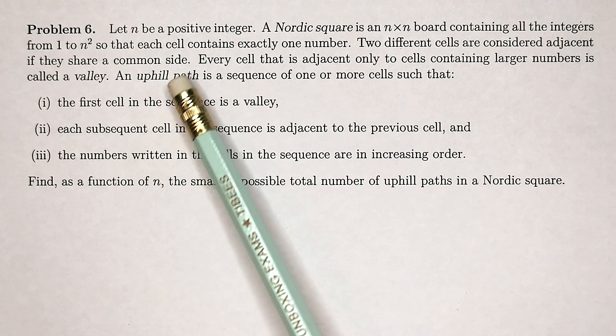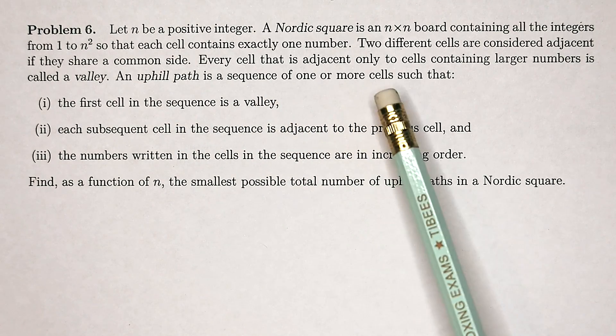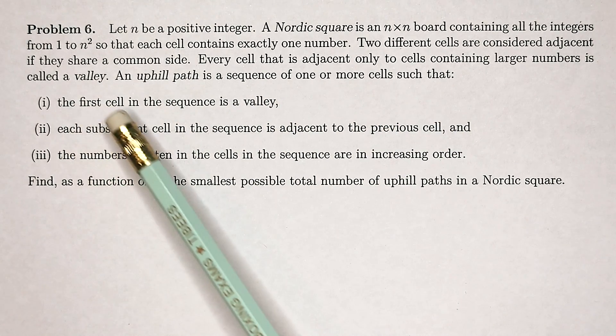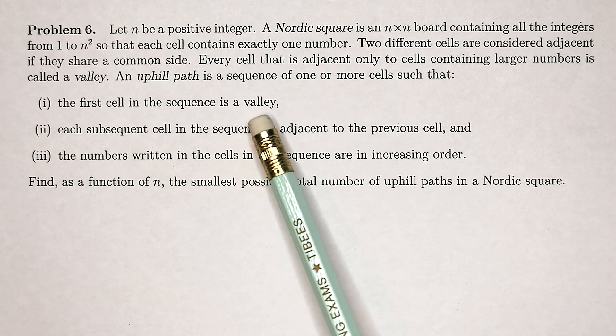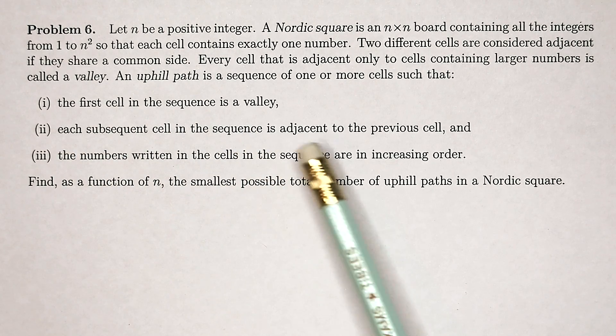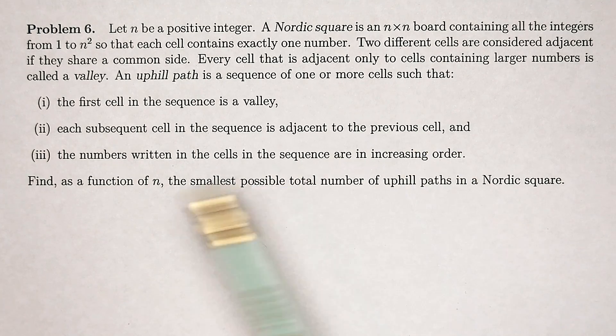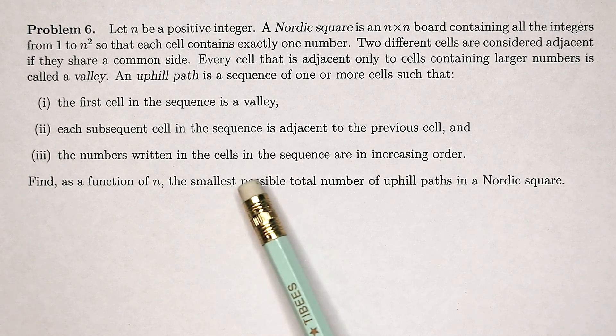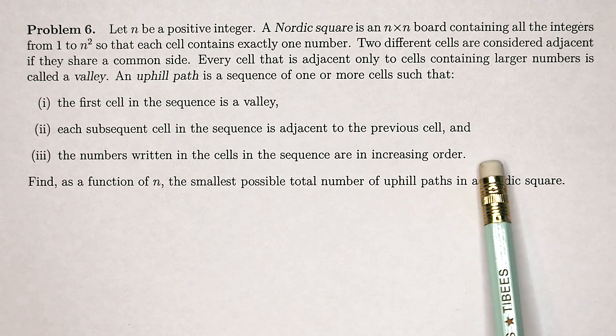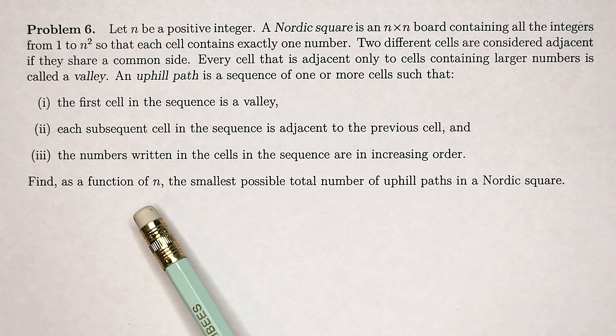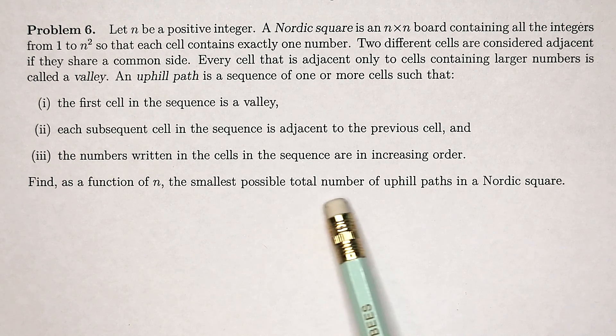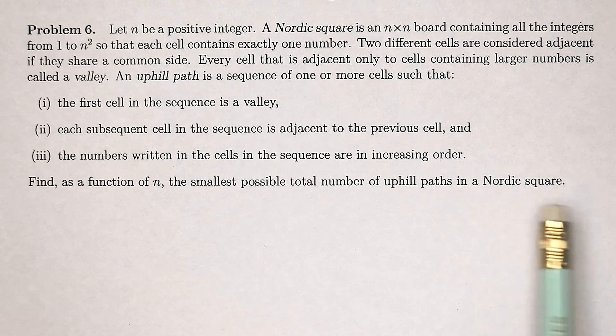An uphill path is a sequence of one or more cells such that the first cell in the sequence is a valley, each subsequent cell in the sequence is adjacent to the previous cell, and the numbers written in the cells in the sequence are in increasing order. Find, as a function of n, the smallest possible number of uphill paths in a Nordic square.